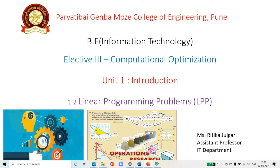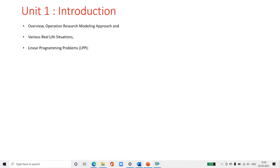The different models present in operational research include the linear programming model, queuing model, transportation problem, inventory model, and game theory model. These are the different types of models present in operational research.